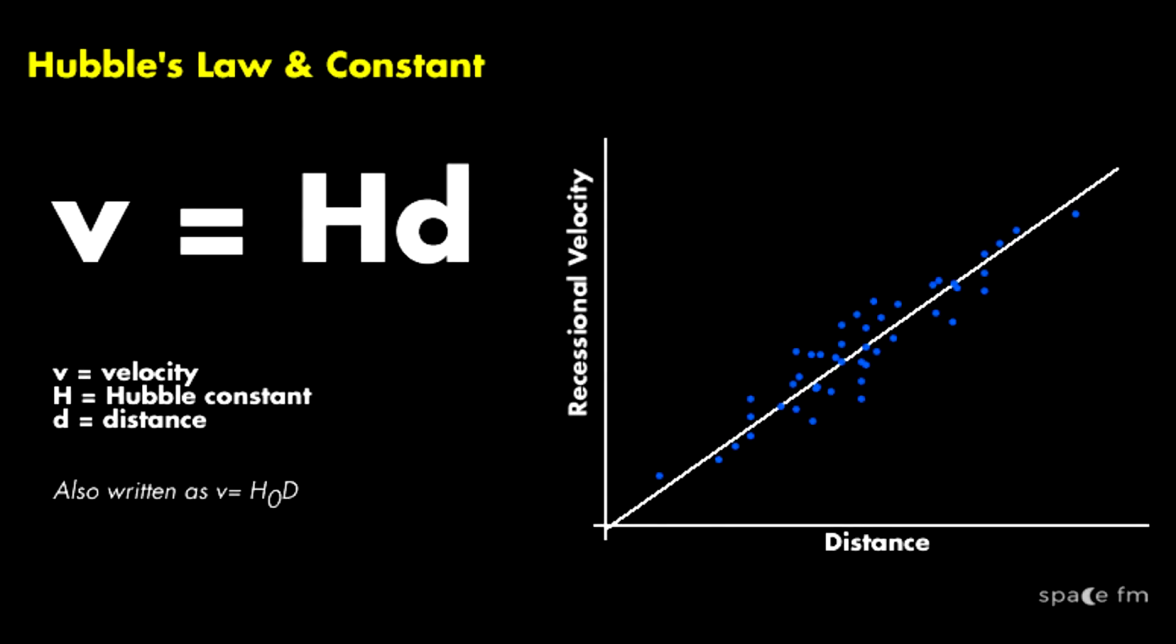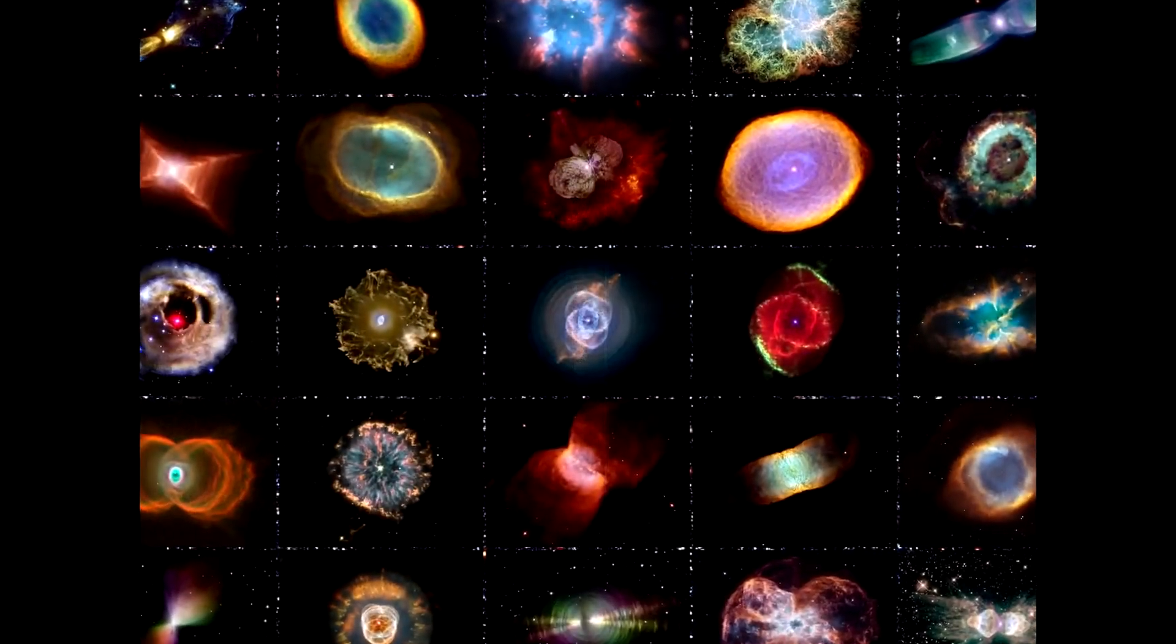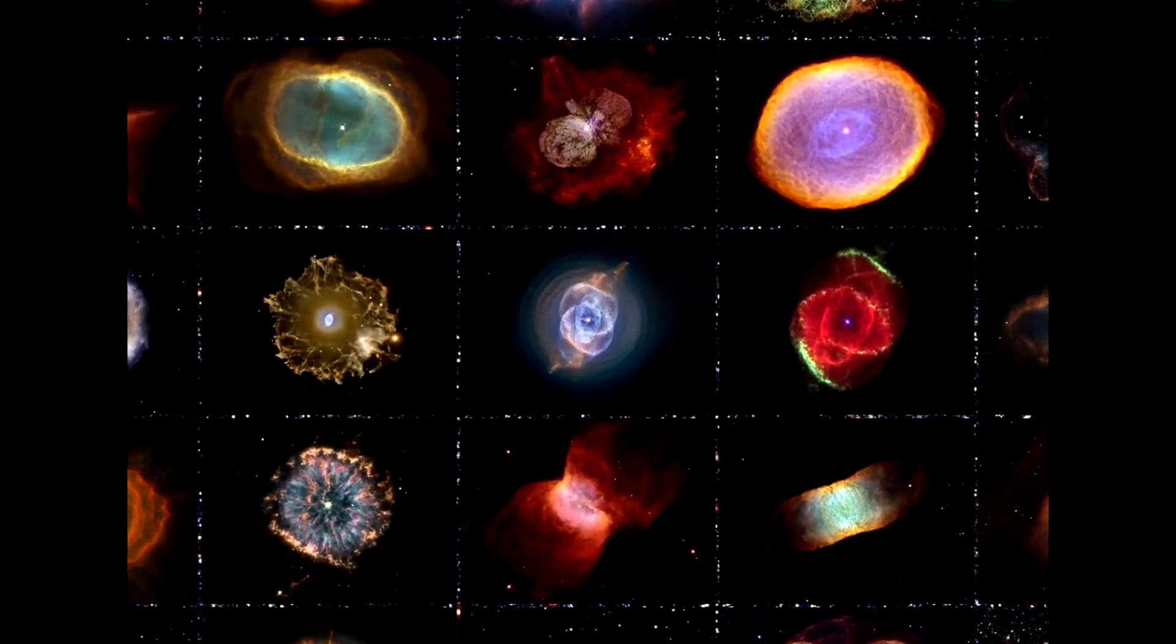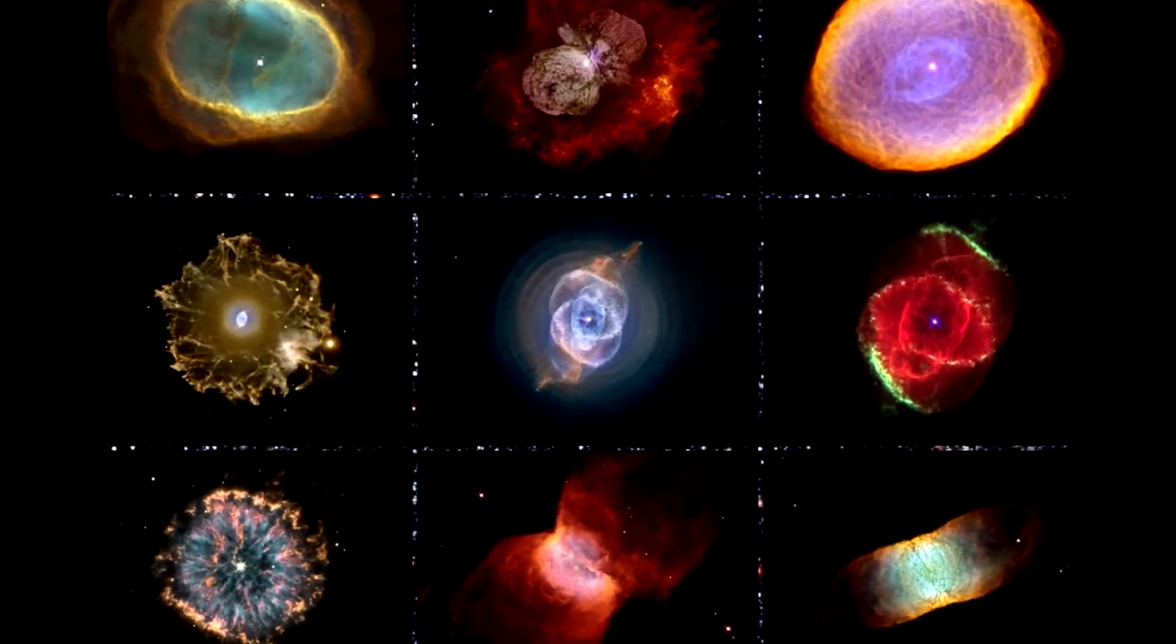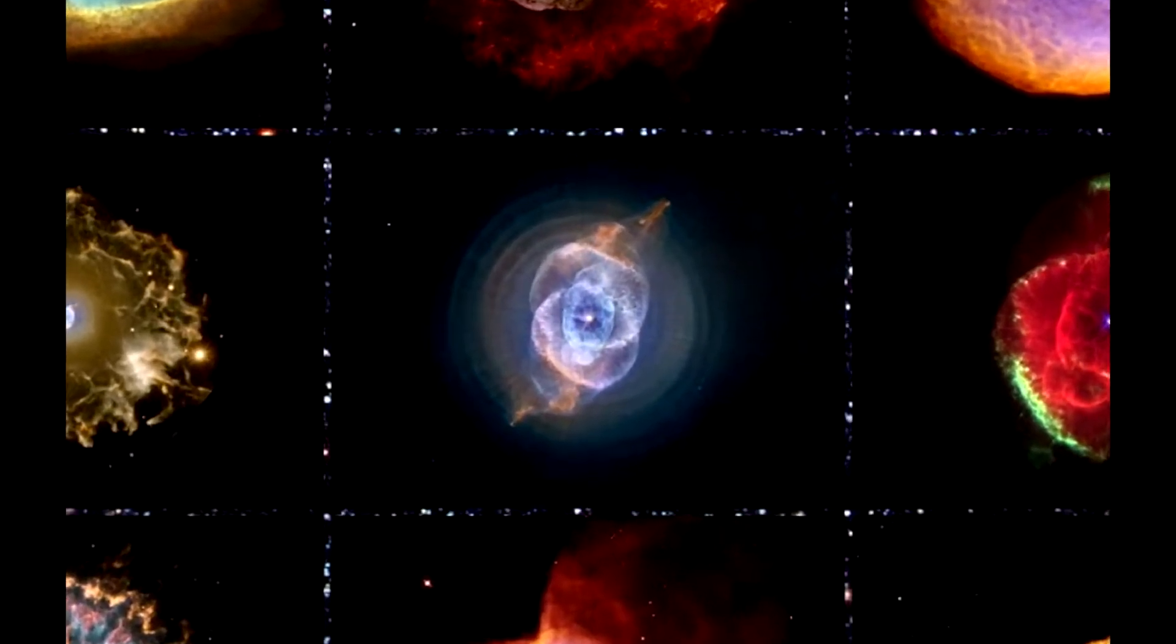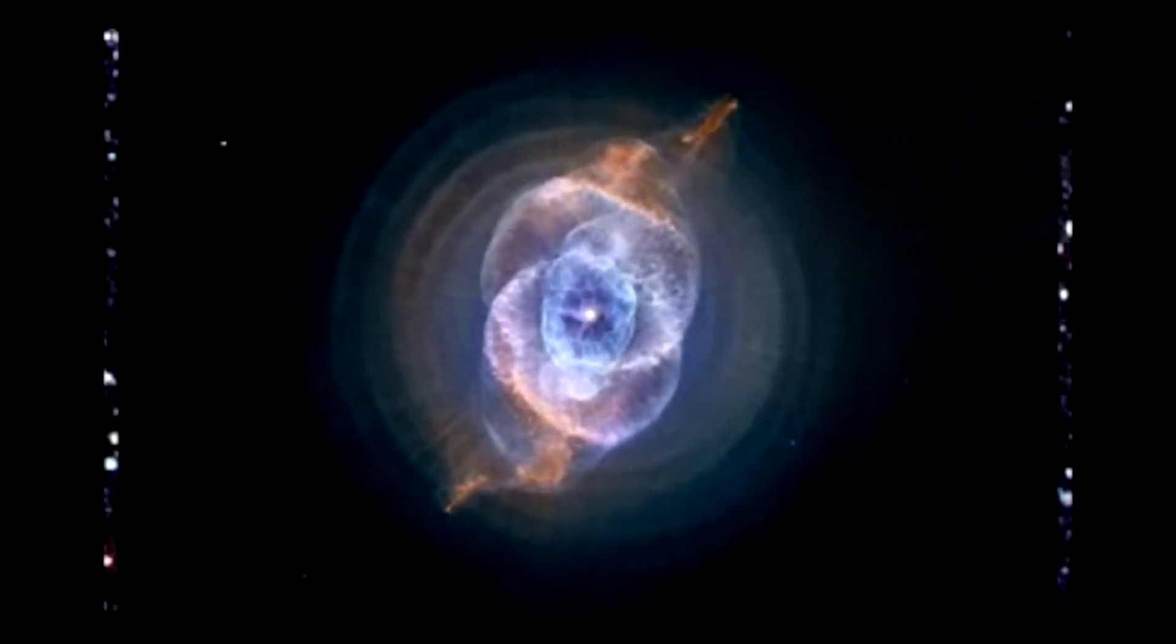Edwin Hubble would use a similar technique to provide evidence that the recessional velocity of a galaxy increases with its distance from the Earth, a property now known as Hubble's Law. Hubble discovered that the universe is much bigger than we ever knew, and what we previously thought were nebulae are actually galaxies outside the Milky Way.